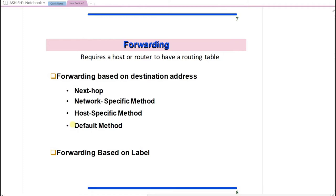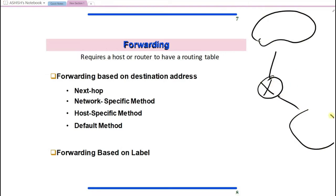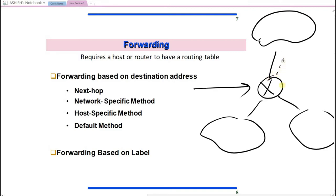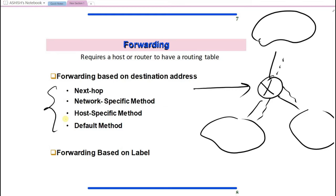Forwarding is a job of the router. When a packet goes to the router, the router has to decide where to forward it. A router may be connected to different networks, and whenever a packet arrives, the router decides whether to forward it to one network or another. This decision is made based on the routing table, which contains information about the entire internet connections the router knows about.